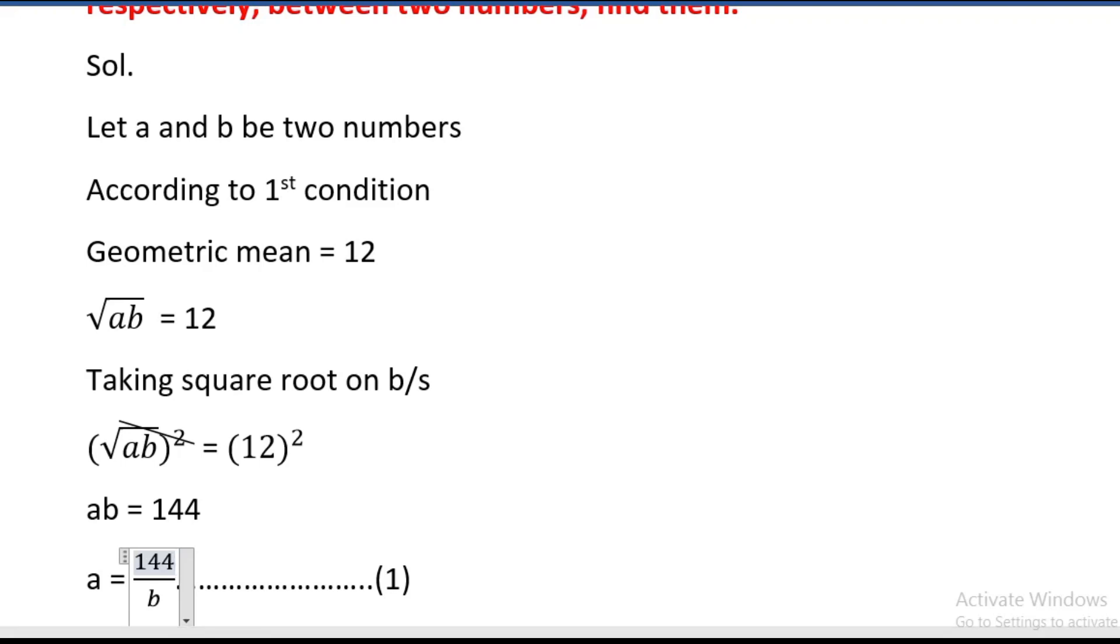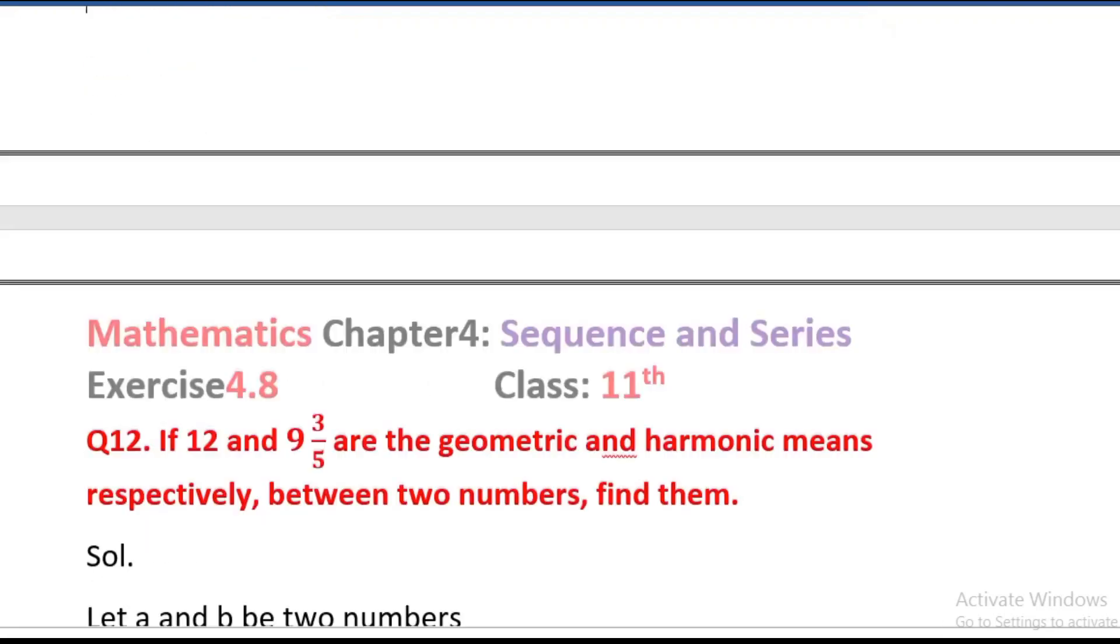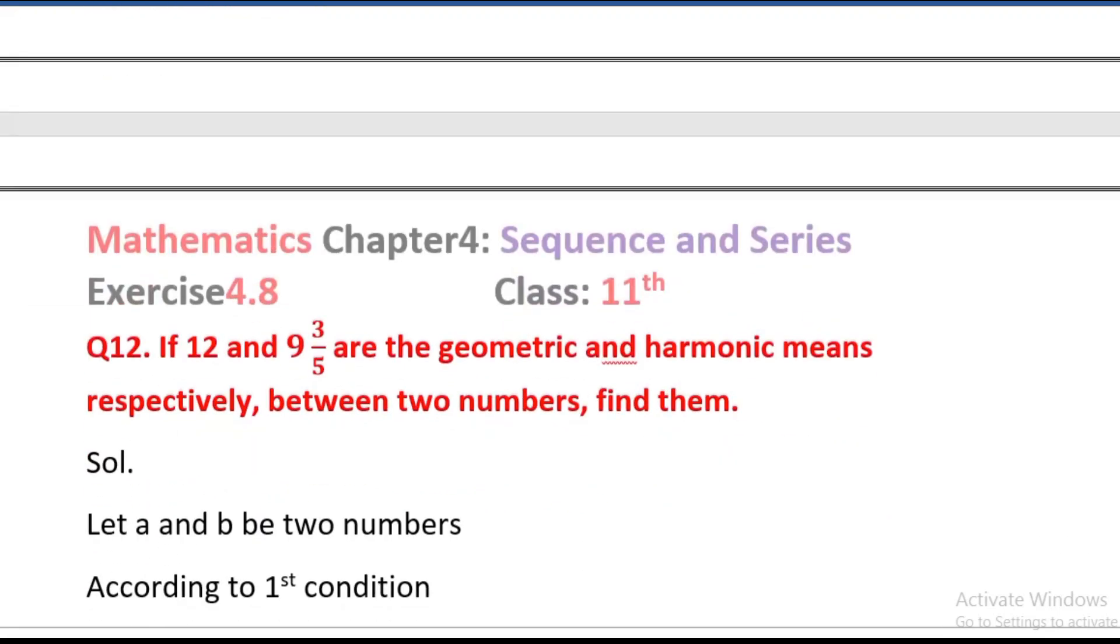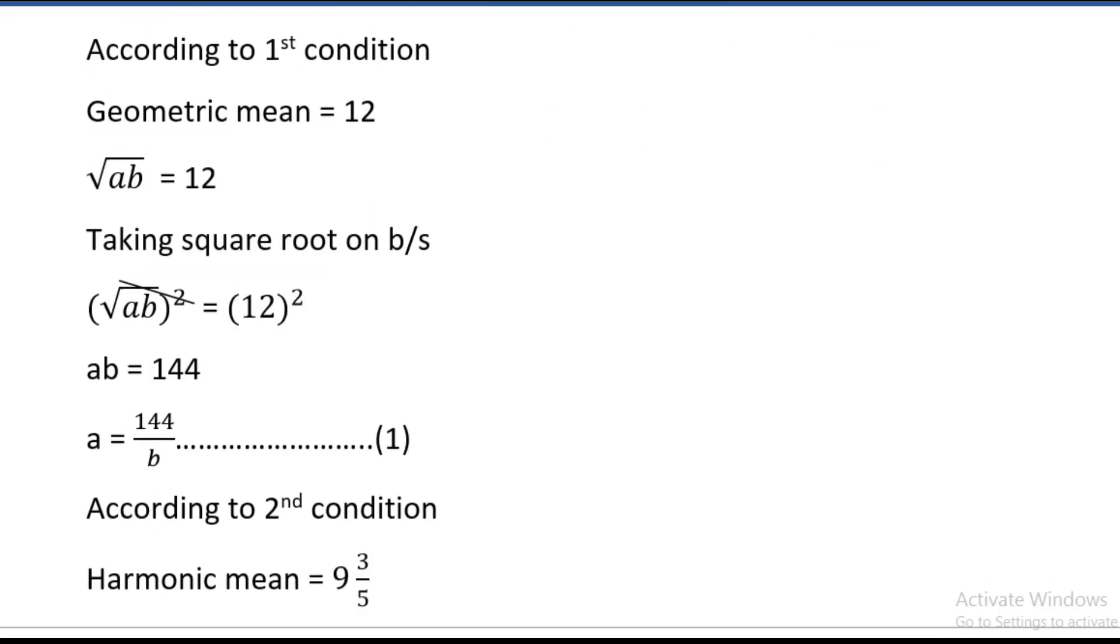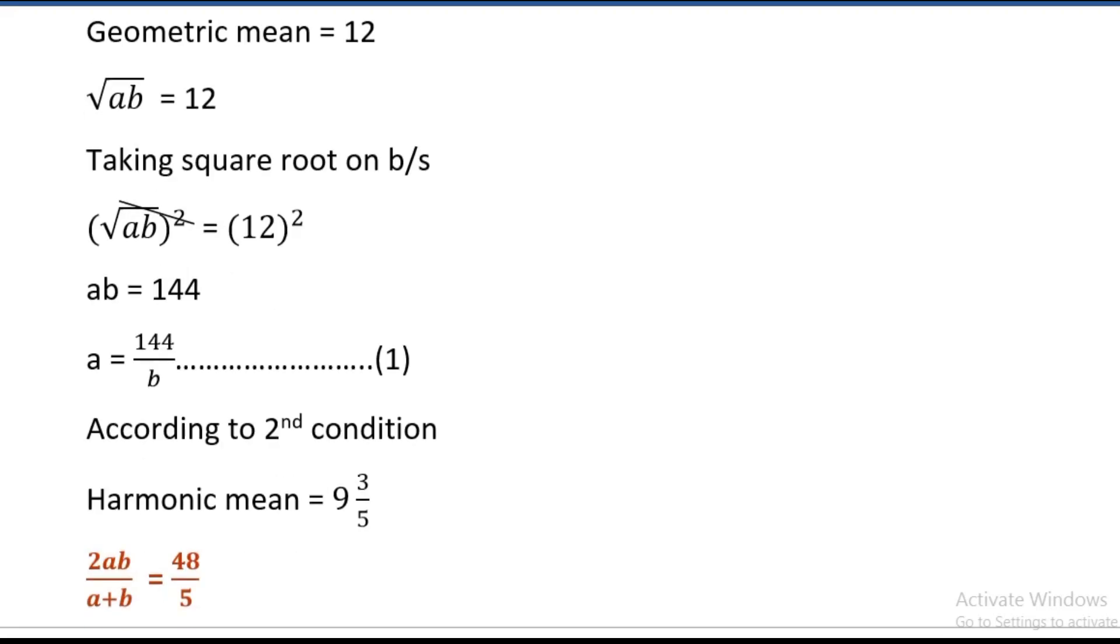According to the second condition, harmonic mean is 9 and 3 divided by 5. So harmonic mean equals 9 and 3 divided by 5.